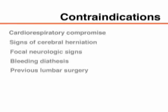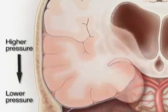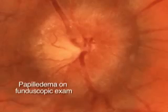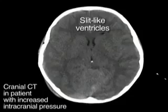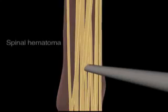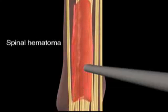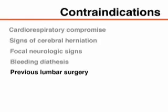There are specific contraindications to lumbar puncture. The condition of patients with cardiorespiratory compromise may worsen as a consequence of the position they need to assume. The procedure should also be avoided in patients with signs of cerebral herniation, incipient herniation, or increased intracranial pressure and in those with focal neurologic signs. In such patients, cranial CT should be performed before lumbar puncture, although CT may not reveal signs of increased intracranial pressure. Finally, there is an increased risk of a spinal hematoma if a coagulopathy is present or if the patient is receiving anticoagulant therapy. Patients who have previously undergone lumbar surgery should be referred to an interventional radiologist.